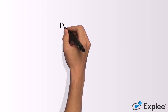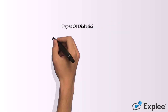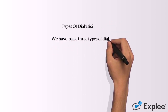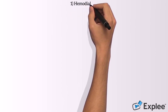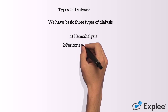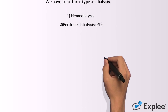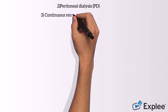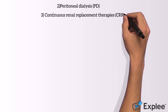Types of dialysis? We have three basic types of dialysis: Number 1, Hemodialysis. Number 2, Peritoneal Dialysis. Number 3, Continuous Renal Replacement Therapies.